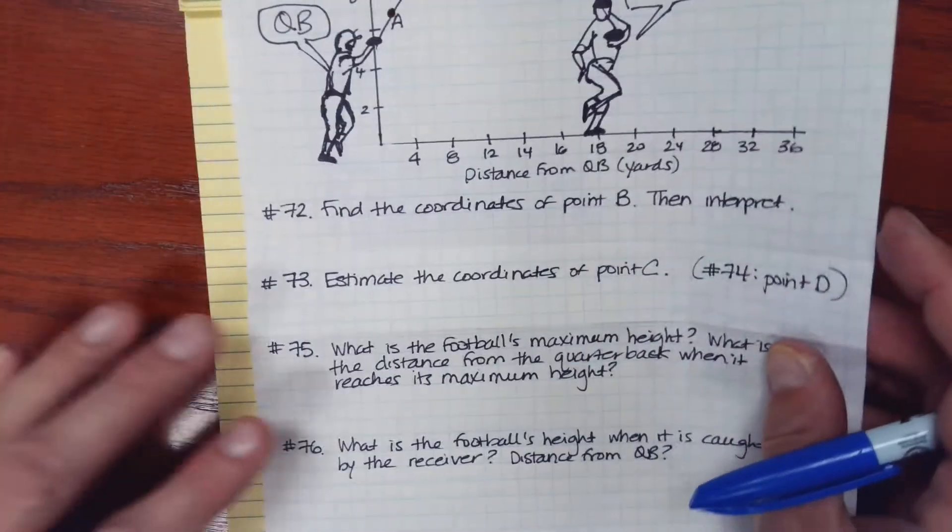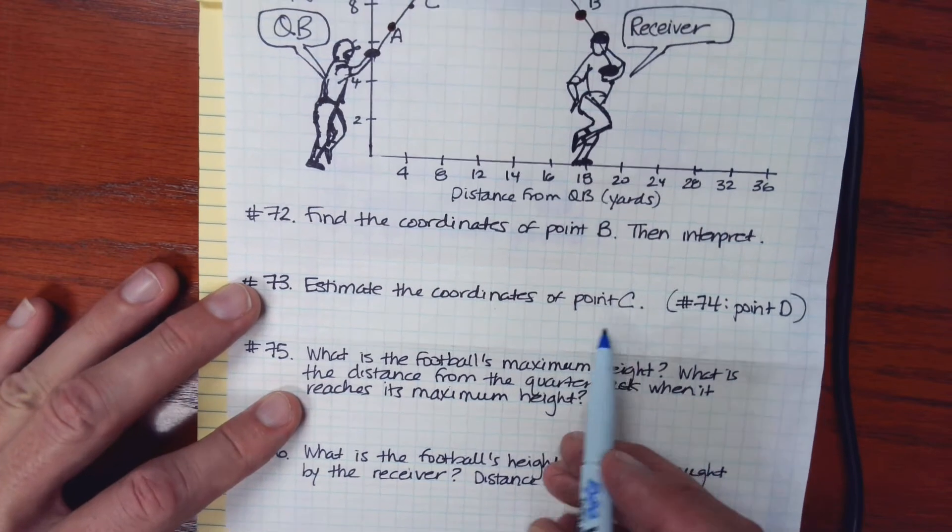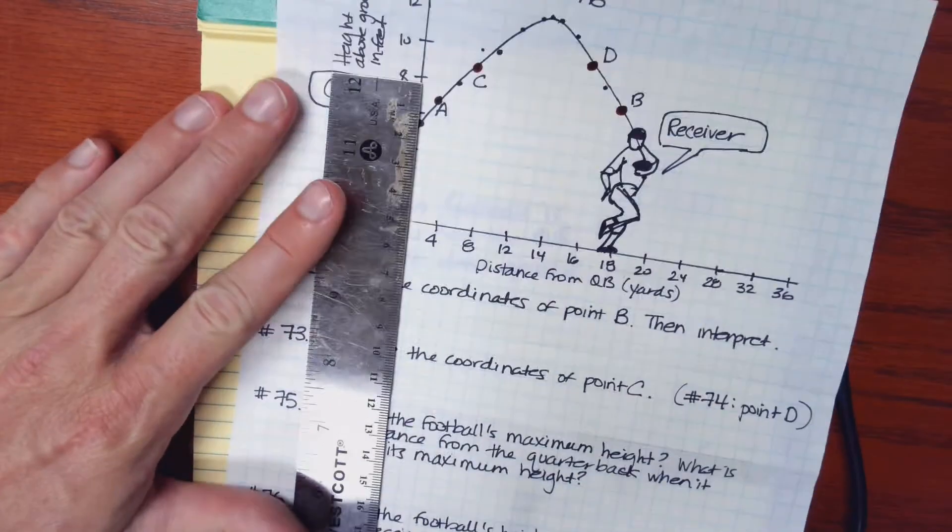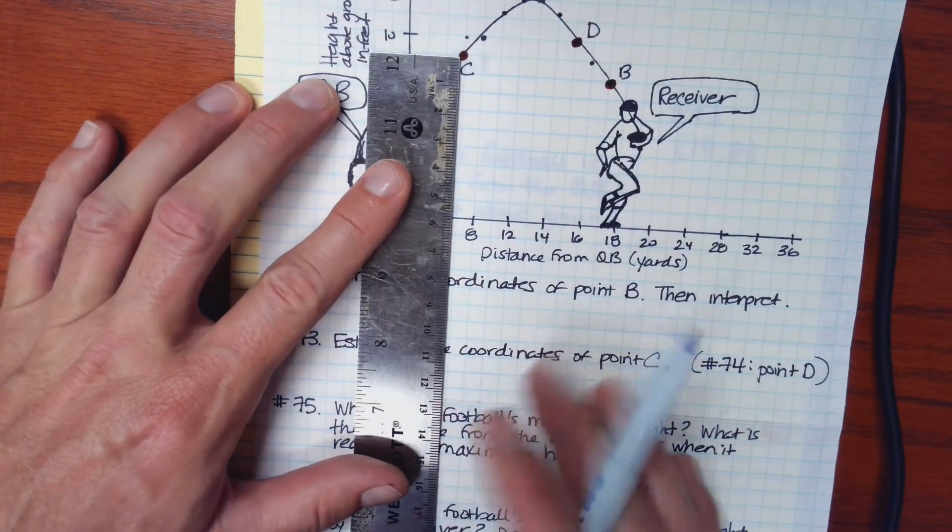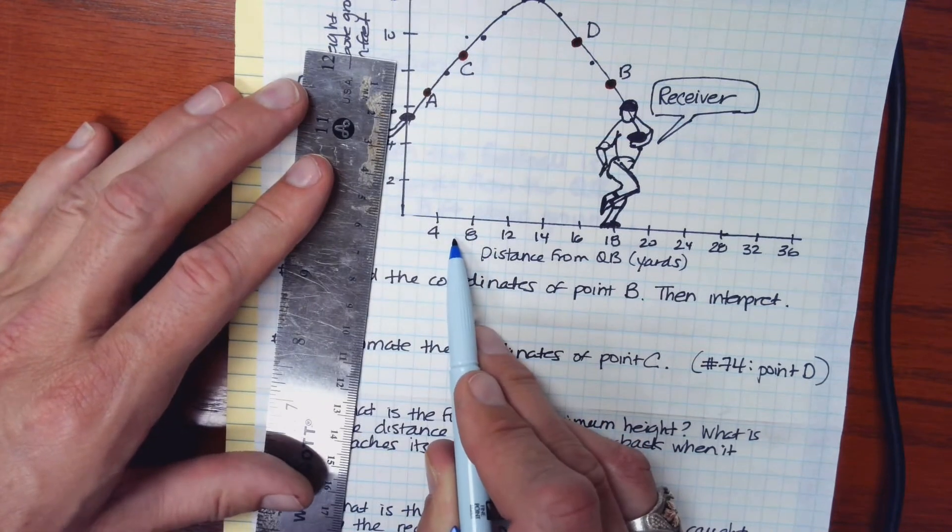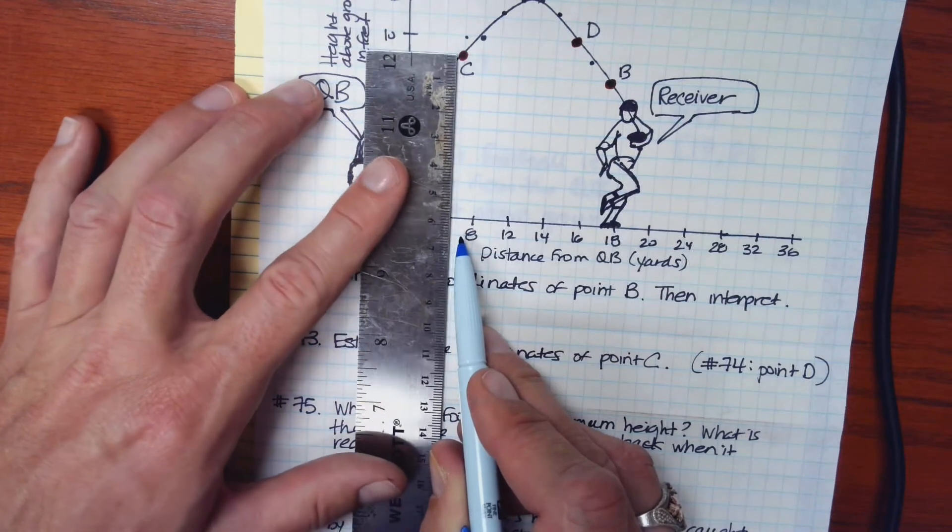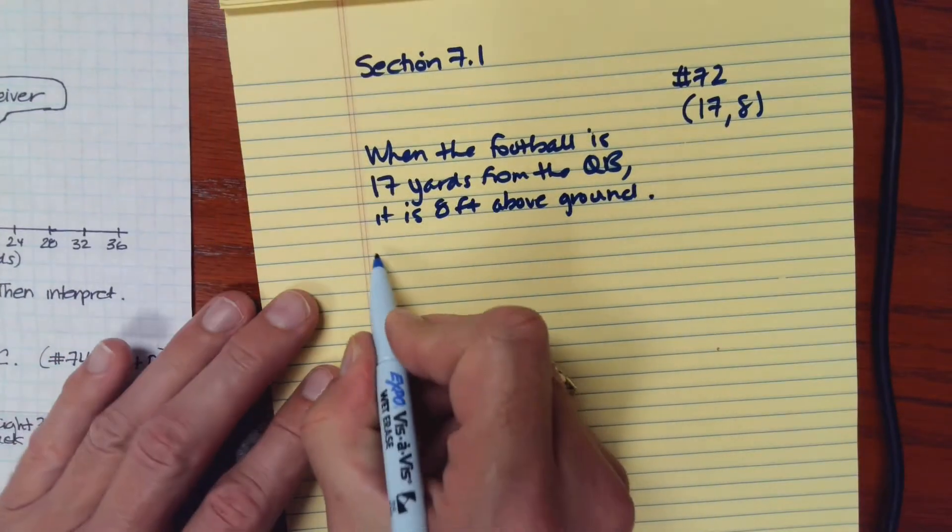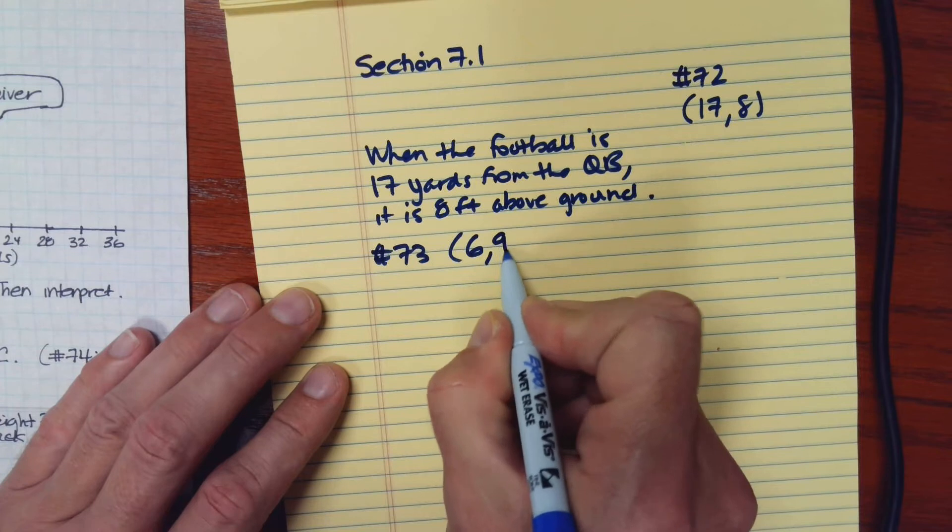So next we're asked to estimate the coordinates of point C. So here's point C. It looks like that is here. And so that's in between 4 and 8, this is 6, 6 yards, and that's 9 feet. So for number 73, we have 6 yards and 9 feet.